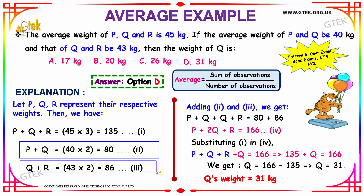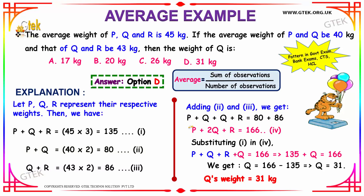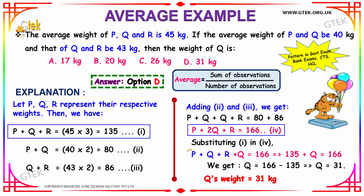Adding equations 2 and 3 gives: P plus Q plus Q plus R equals 80 plus 86, which is 166. We have two Q terms so we club them. This forms our fourth equation. Substituting the first equation, P plus Q plus R equals 135, we get 135 plus Q equals 166.